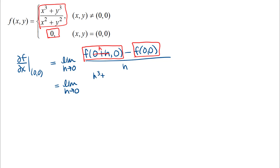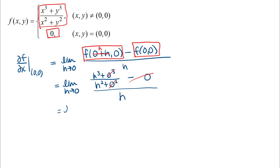So I'll put in h for x and 0 for y into the first piece, giving me h³ + 0³ over h² + 0², that's my f(h, 0). Then minus f(0, 0), which is 0, all over h. Now I just let the symbols tell me what to do and finish this limit. The terms with 0 simplify away, so I can rewrite this as the limit as h approaches 0 of h³ over h², times 1 over h. Simplifying that, I get the limit as h approaches 0 of 1, which is 1.